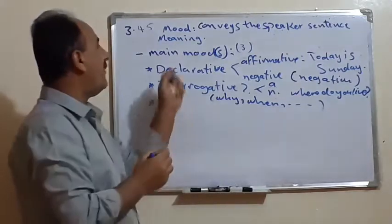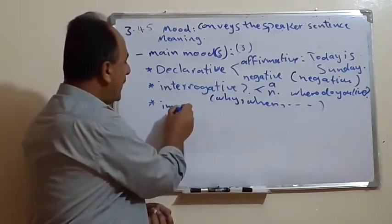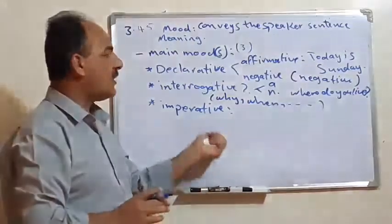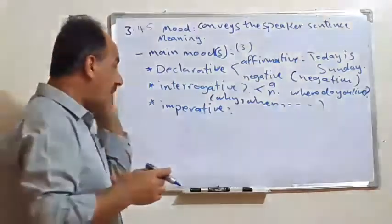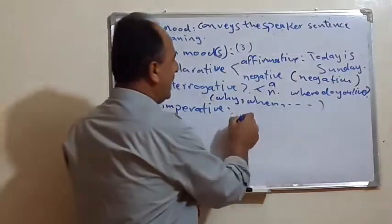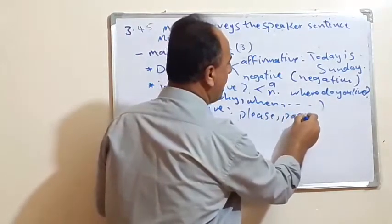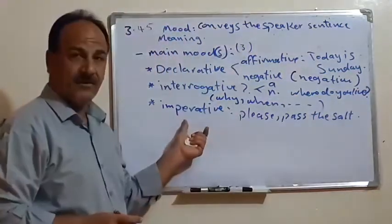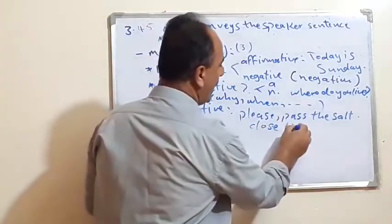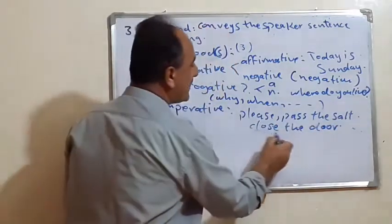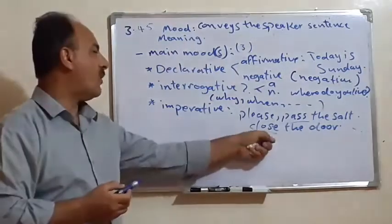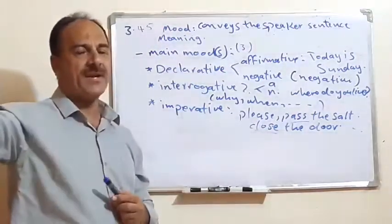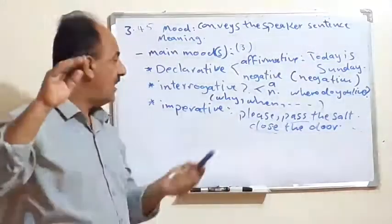The third category of the main group is what we call the imperative — also called command, order, or request. For example, 'Please pass the salt' means give me the salt. Or 'Close the door.' The imperative always starts with the verb, and the verb is in the simple or base form. For example: 'Come here,' 'Go there,' 'Find an answer,' 'Speak slowly.' Basically all these we call imperative. This is the first group.